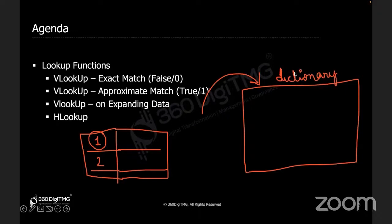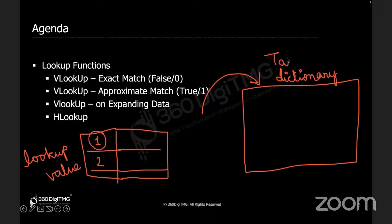The place where we go and search for the word is called the table array. And what I am trying to search for becomes the lookup value. Where I am searching for it is the table array — which I'm calling the dictionary in this case, because I am searching for the meaning of a word. Otherwise it is a table array.